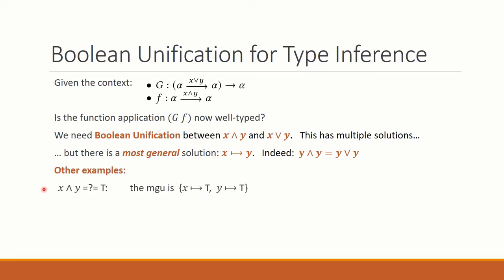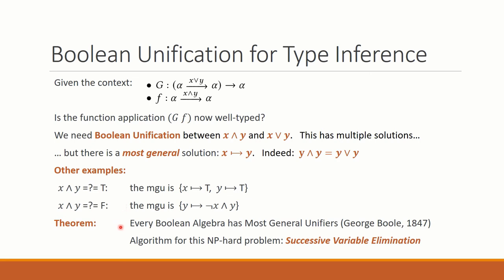Another example is here if we try to unify x and y with true. The only solution is that x and y are both true. The last example, x and y equals false. Here there seem to be multiple solutions. x could be false or y could be false. But the most general solution is actually to map y to not x and y. More generally, every Boolean algebra admits most general unifiers. This is a result that dates back to George Boole himself in 1847. He also suggested a procedure to compute the most general unifier, solving an NP-hard problem.